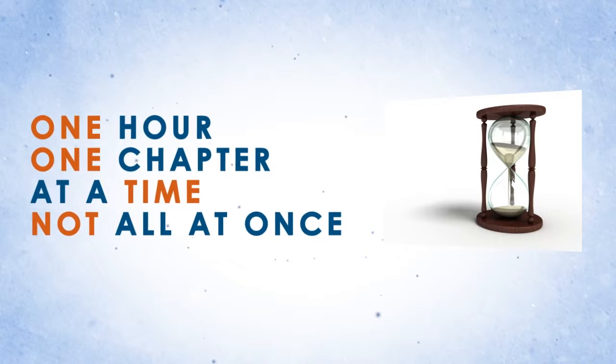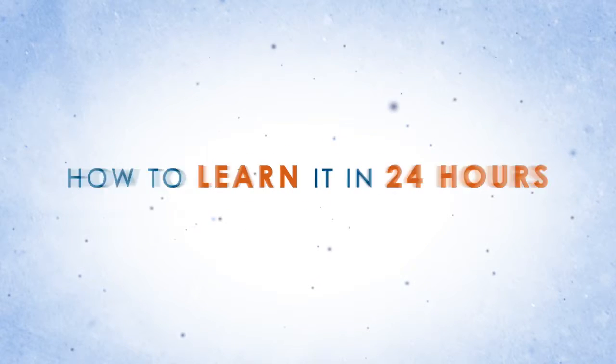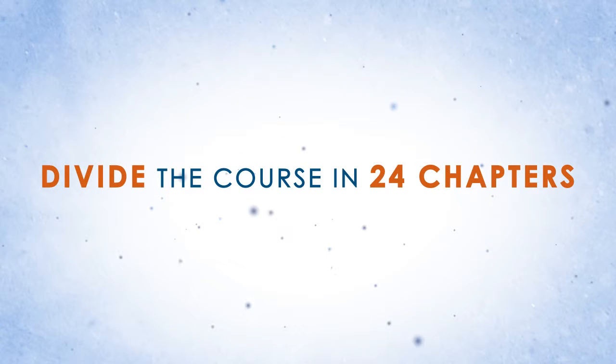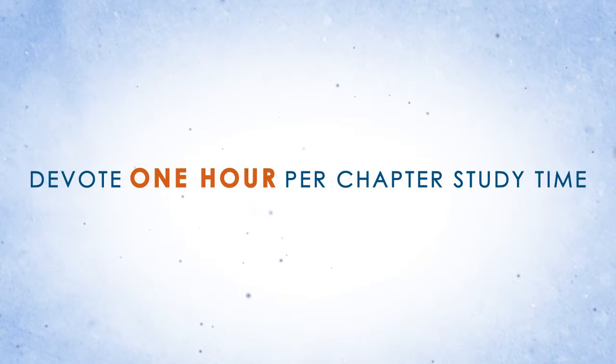Don't try to bite off the entire book at once. So how do you learn it in 24 hours then? The Rapid Learning System divides the course into 24 chapters and one hour study time per chapter.